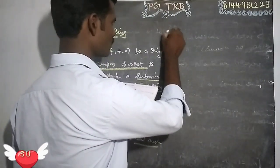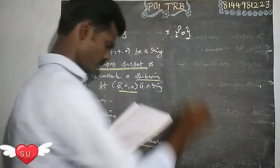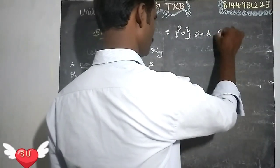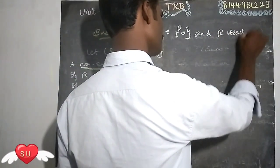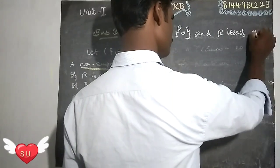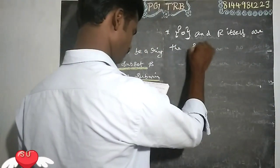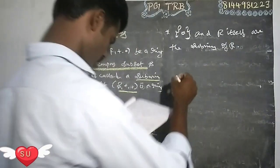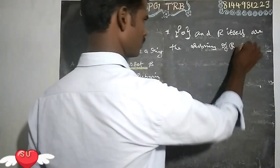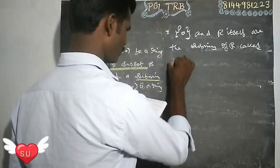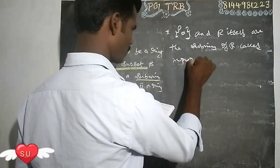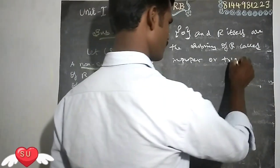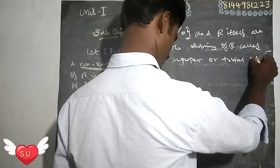Next important one: the set of zero, and R itself, are subrings of R. These are called improper subrings. We will talk about proper and improper subrings — similar to how we discussed trivial and non-trivial subgroups in the textbook.